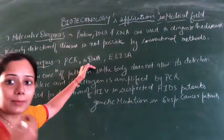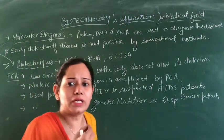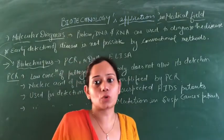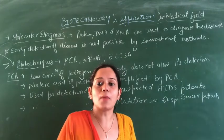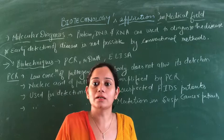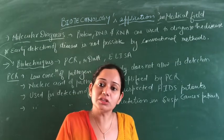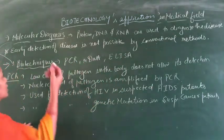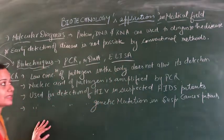Even if a pathogen has attacked our body, there are no symptoms in the beginning. Some diseases show symptoms only after the pathogen has multiplied in our body. But when the pathogen is just starting in our body, at low concentration, and we are not showing symptoms, we can still detect the disease using techniques like PCR, recombinant DNA technology, and ELISA test.